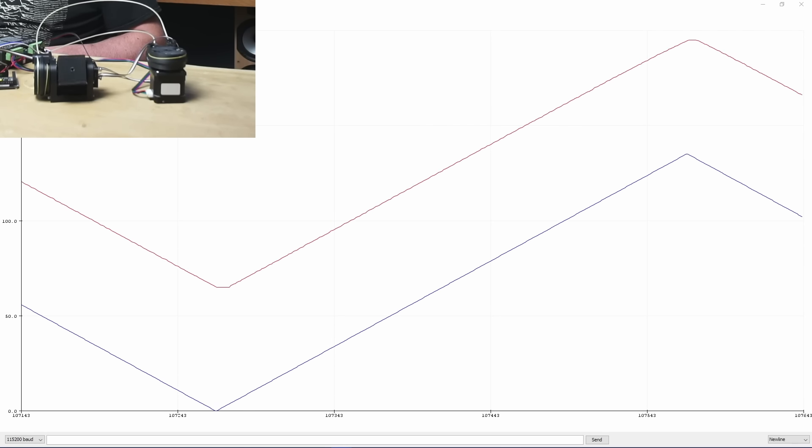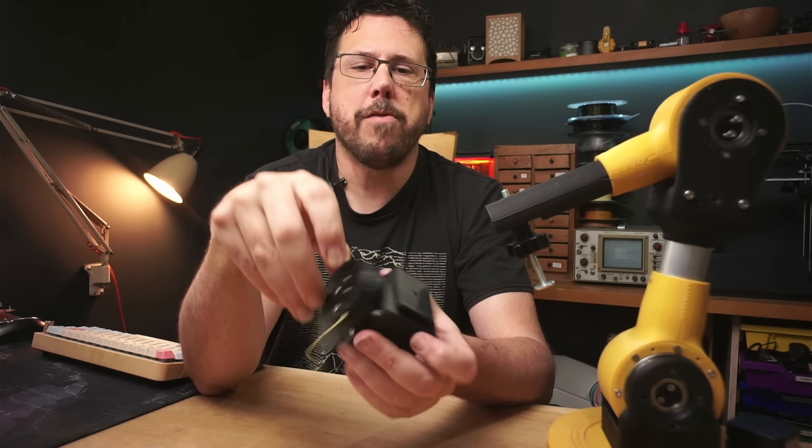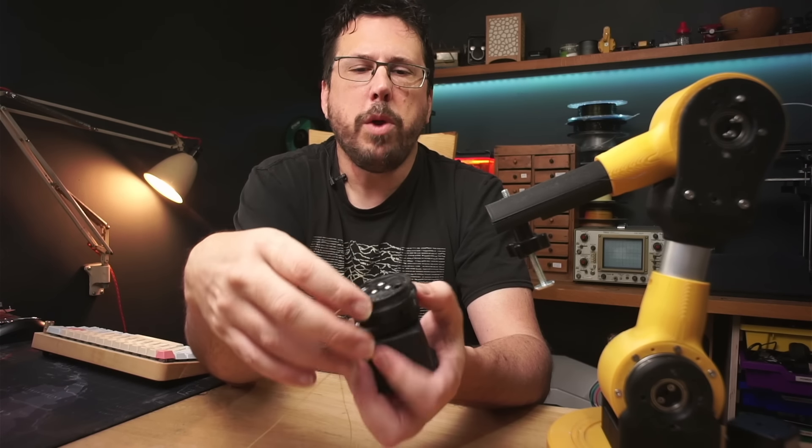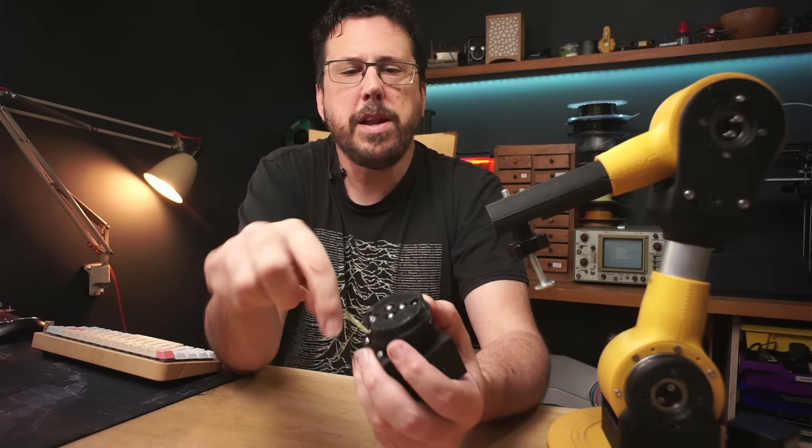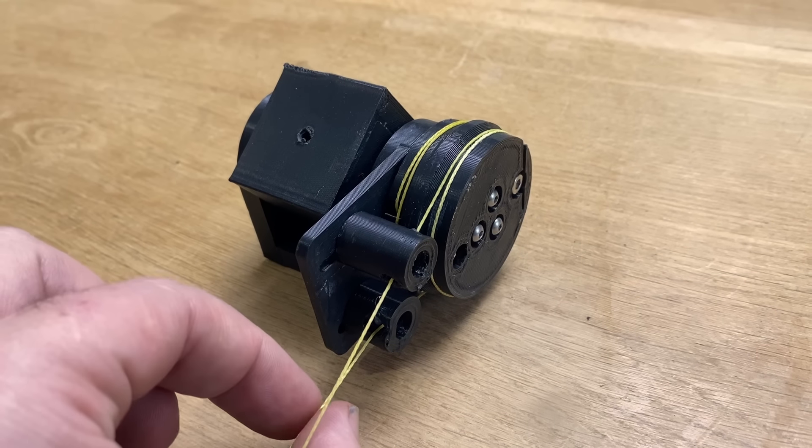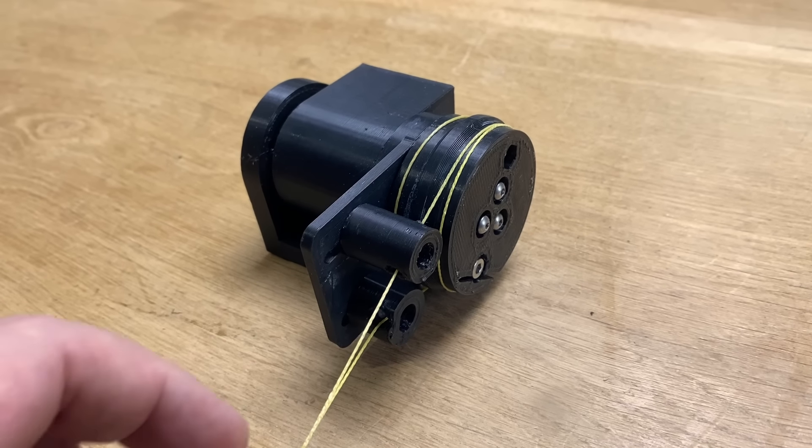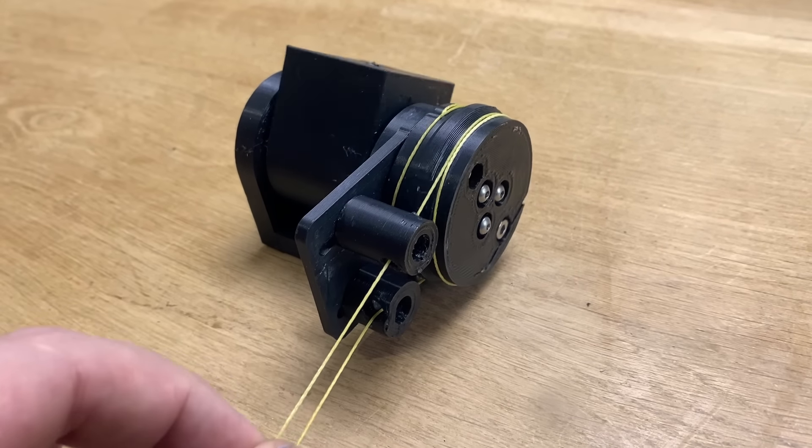The idea is really simple. We simply have two bearings and a pulley. We can wrap two pieces of fishing line around the pulley going in different directions, and if we pull this line it rotates one way, if we pull this line it rotates the other.